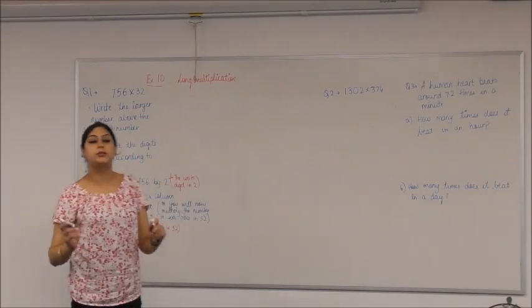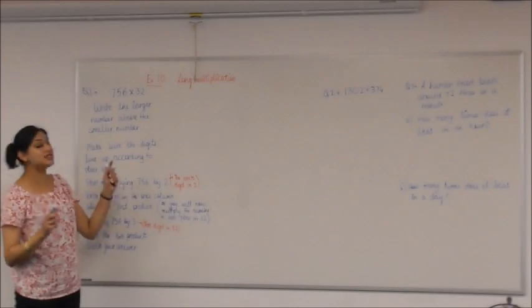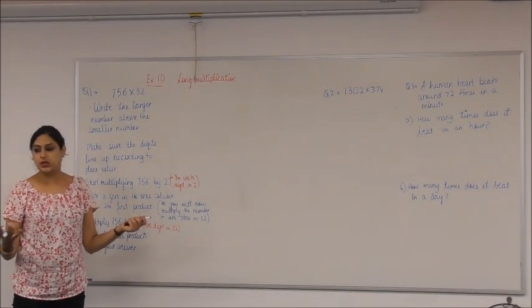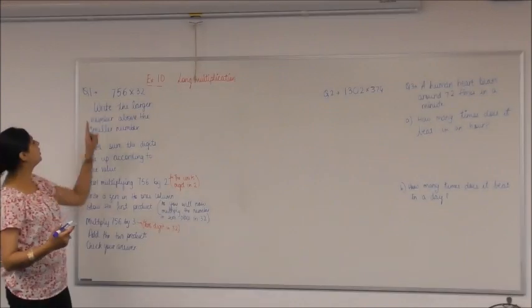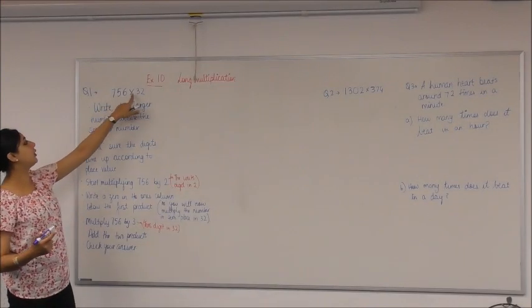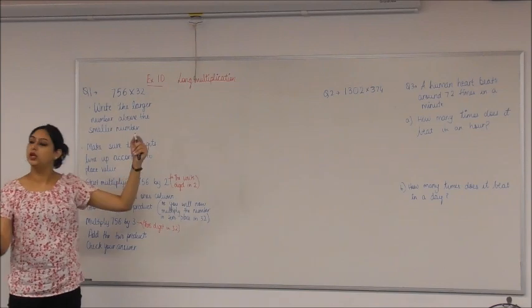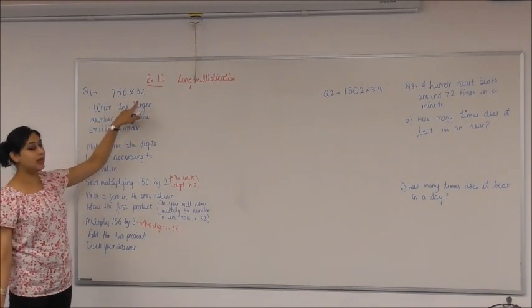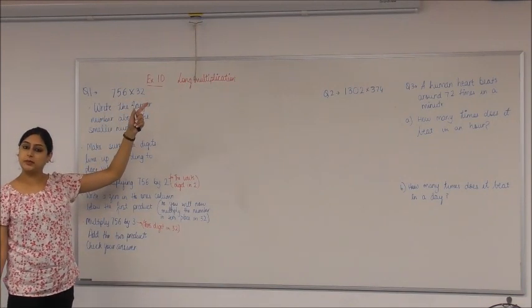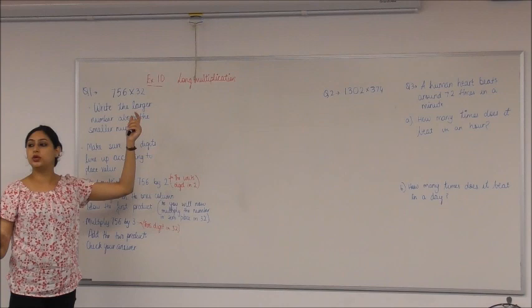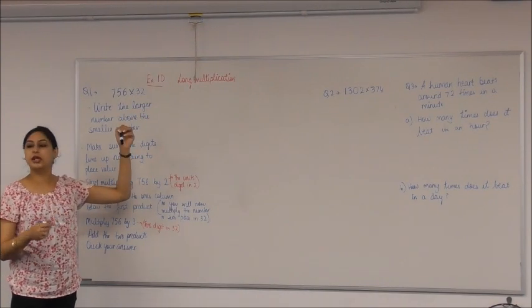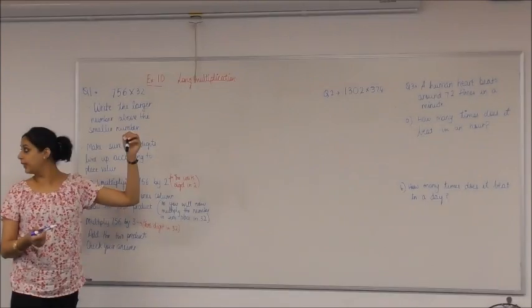Okay, so we did short multiplication yesterday, which had single-digit numbers multiplied with larger numbers, two digits, three digits. Today we're going to do long multiplication where we have two-digit numbers being multiplied with two-digit or bigger numbers. So there are some rules that I've written down, and I'll be using this example to show you the steps of long multiplication. I am well aware that you have done this in primary schools, but pay attention because there are certain things you need to follow to get the answer correct every single time.